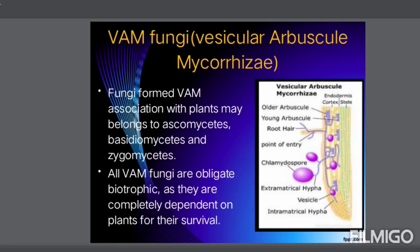What is meant by VAM fungi? The full form of VAM fungi is Vesicular Arbuscular Mycorrhiza. The fungi forming VAM associations with plants belong to Ascomycetes, Basidiomycetes, and Zygomycetes. The VAM fungi are mostly called obligate biotrophs because they completely depend on the plant for their survival.